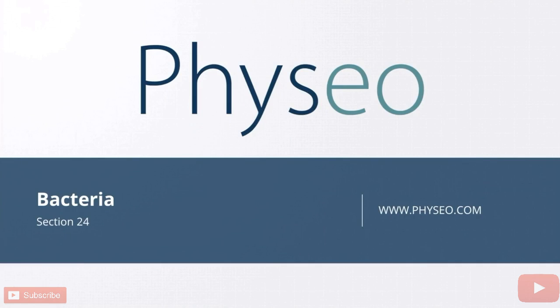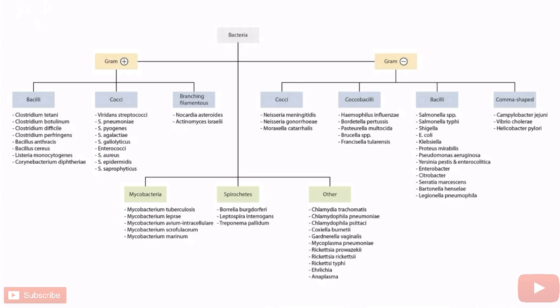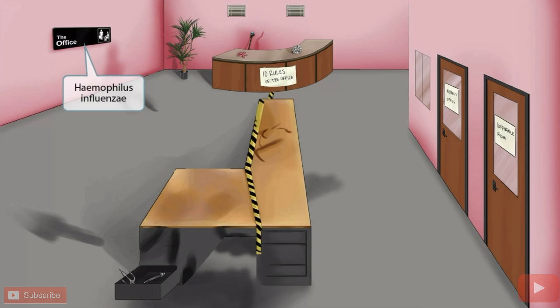Welcome to section 24 of Bacteria. This is our bacteria overview figure, and in this video we'll be discussing Haemophilus influenzae, or H flu. The scene takes place inside of an office — office sounds like Haemophilus, so it will be our symbol for Haemophilus influenzae.